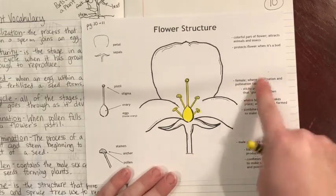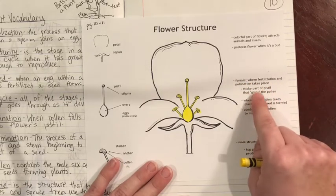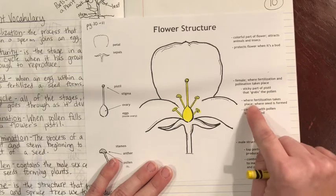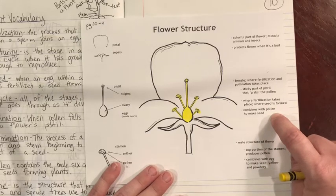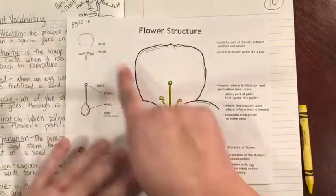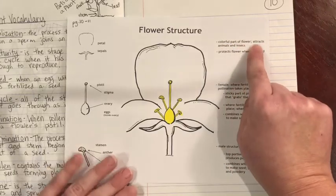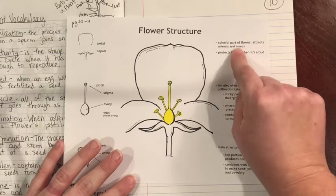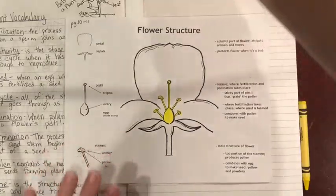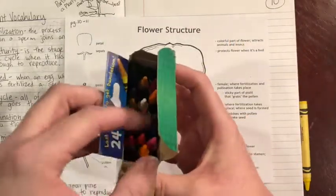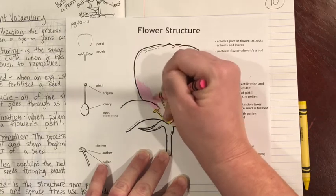Looking to the right it gives us more information — it says the pistil is female, where fertilization and pollination takes place. The sticky part of the pistil grabs the pollen, and where fertilization takes place is where the seed is formed, combining with the pollen to make the seed. At the top we have our petals of our flower, and this is where we're going to add some color to represent our flower — this is what attracts animals and insects to help with pollination and reproduction. Go ahead and take whatever color you want; I'm going to take a pink and quickly shade in the petals.